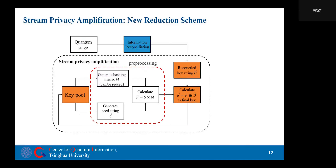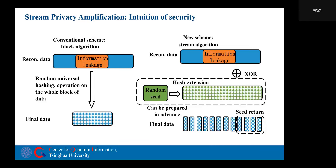The process of stream-private amplification is similar to that of stream cipher. First, some bits are selected from the key pool as seeds to generate a reusable hashing matrix. Then, a pseudo-random number string is obtained by multiplying these two parts, and finally, the users XOR the pseudo-random number strings with the reconciled key bit by bit to get the final key. Intuitively, the aim of conventional block-private amplification is to eliminate the leaked information by shortening the reconciled key string using hashing operations. While the aim of stream-private amplification is to add the randomness of the seed to the leaked part of the reconciled key. As a result, both can ensure there is no information leakage in the final key string.